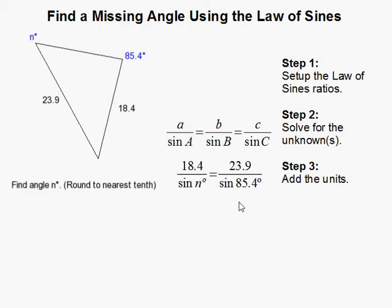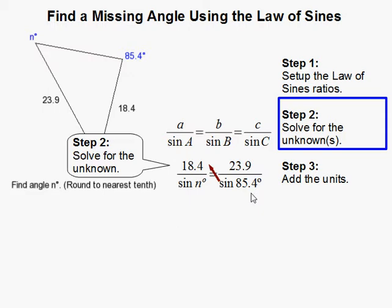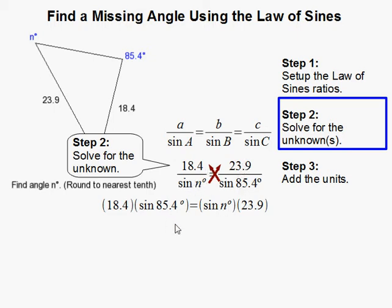Once you have that set up, it's actually very, very easy. You just solve for the unknown. I'm going to cross multiply — multiply this denominator by this numerator and this denominator by this numerator — and I get this.